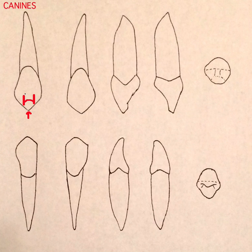In this case the middle facial lobe is very expanded and very convex. This tooth is convex all the way from the crown to the root because of that expanded middle facial lobe.